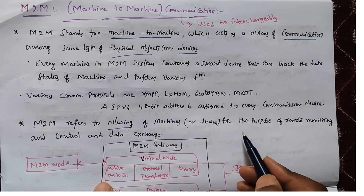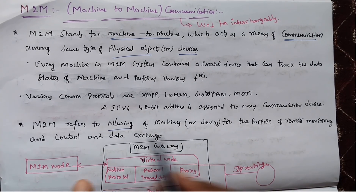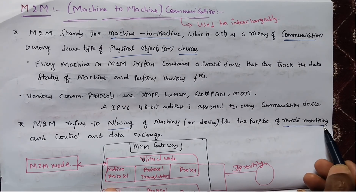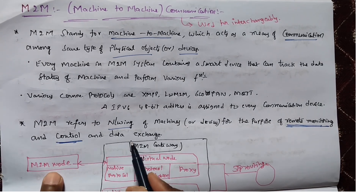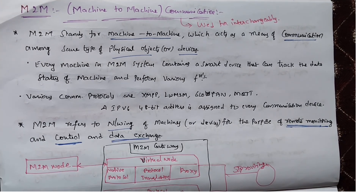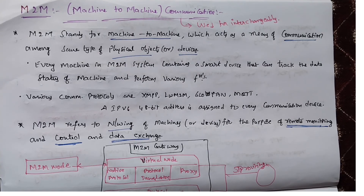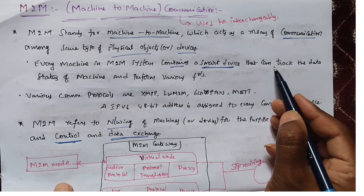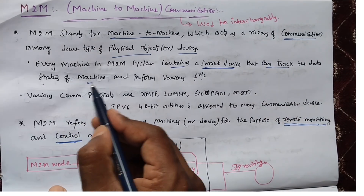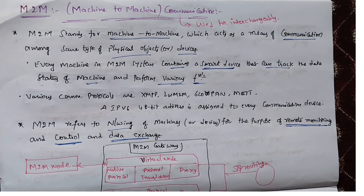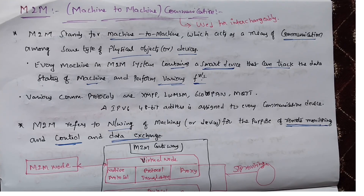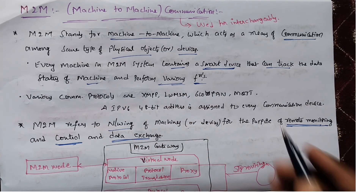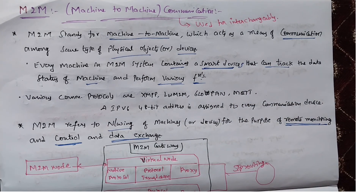M2M refers to networking of machines or devices for the purpose of remote monitoring, as well as control and data exchange. The main thing is that data is exchanged from one device to another device by using M2M. Every machine in an M2M system contains a smart device that can track the data status of the machine and perform various functions.